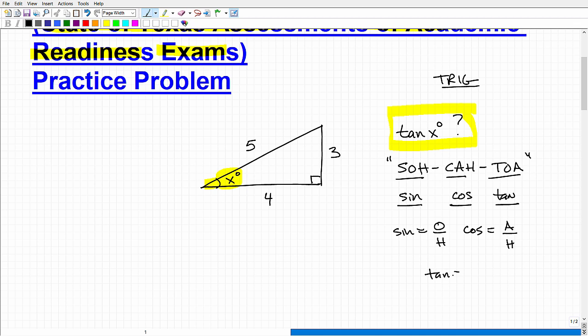And then TOA, the tangent is equal to opposite over the adjacent. So now we have to just figure out what is opposite, what is adjacent, what's hypotenuse. So all you out there know that in a right triangle, the longest side is always the hypotenuse.